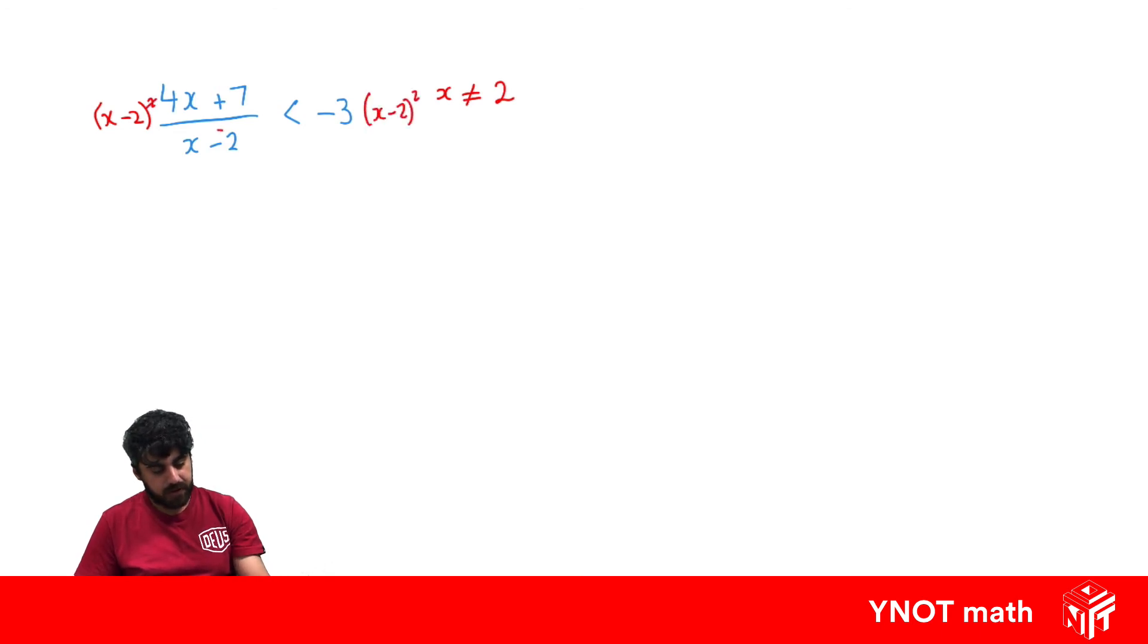So the square and the denominator will cancel out. So we're going to have x minus 2 times 4x plus 7 is less than minus 3 times x minus 2 squared. While we're here we'll expand out this bracket here, so we get x squared minus 4x plus 4. Let's expand this one out, so we'll get 4x squared plus 7x minus 8x minus 14 is less than minus 3x squared plus 12x minus 12.